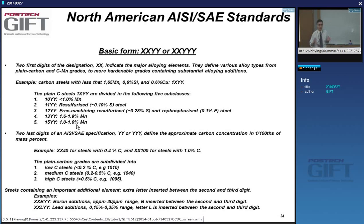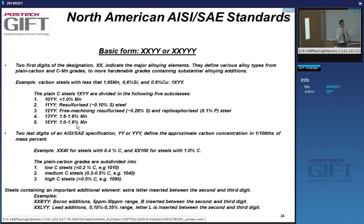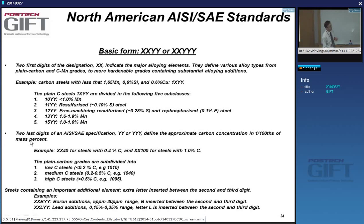You usually have to go back through the tables to find out what is specifically referred to — that can be a little frustrating. Luckily, the last two or three digits YY or YYY define the approximate carbon concentration times 100. For instance, XX40 means approximately 0.4% carbon, and XX100 means approximately 1% carbon.